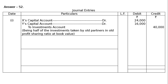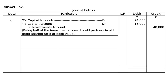Second entry: the remaining investments were revalued at Rs 50,000. Remaining half is Rs 40,000, revalued at Rs 50,000. Increase in the value of investments by Rs 10,000. Investment account debited Rs 10,000 to revaluation account Rs 10,000 — being increase in the value of investments credited to revaluation account.